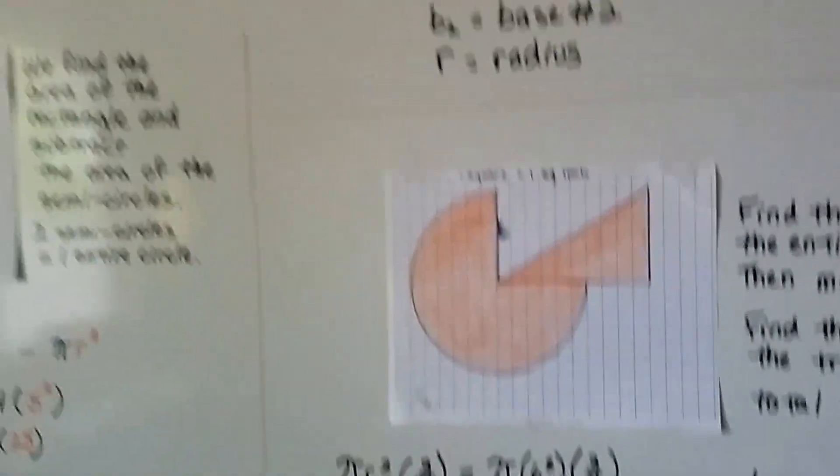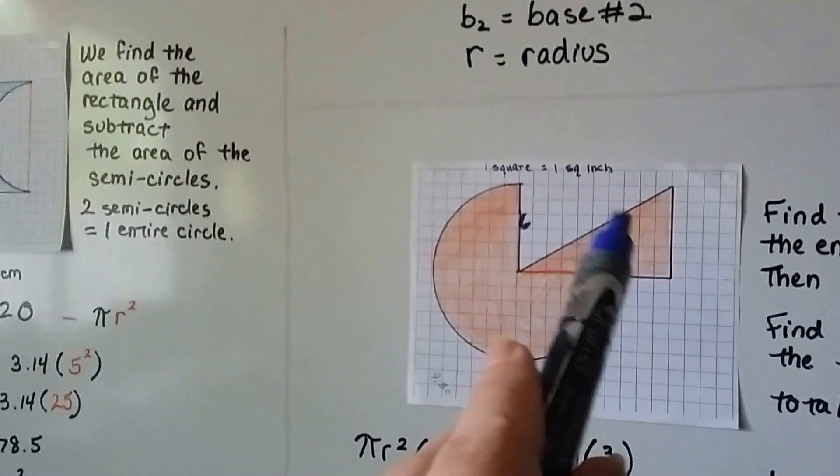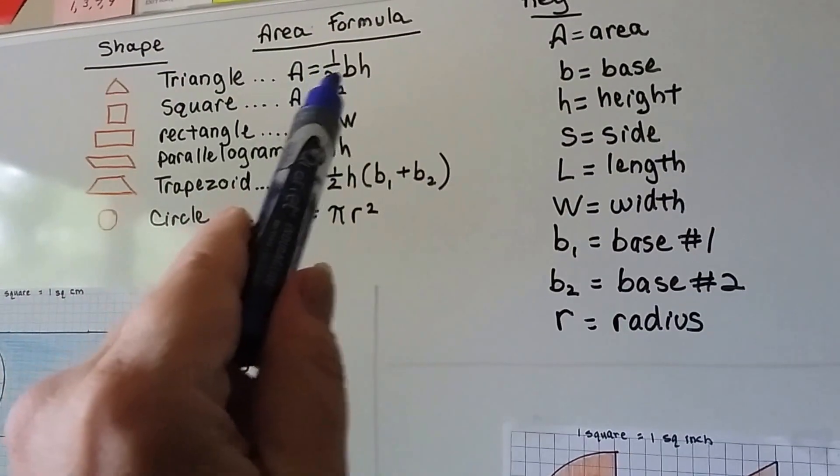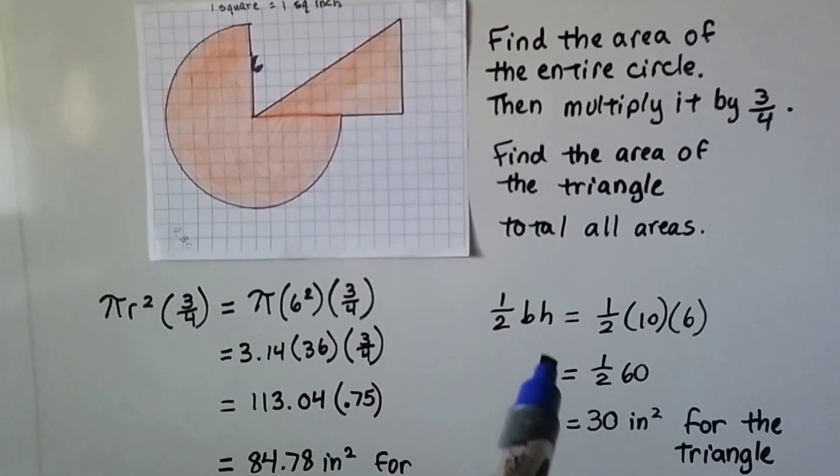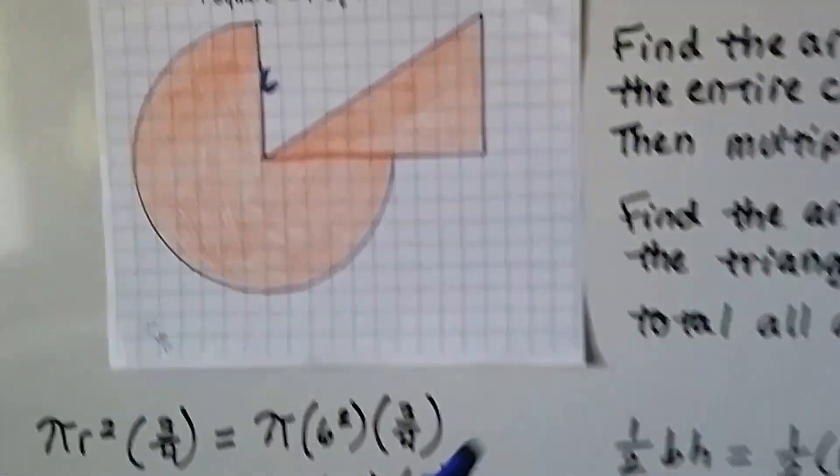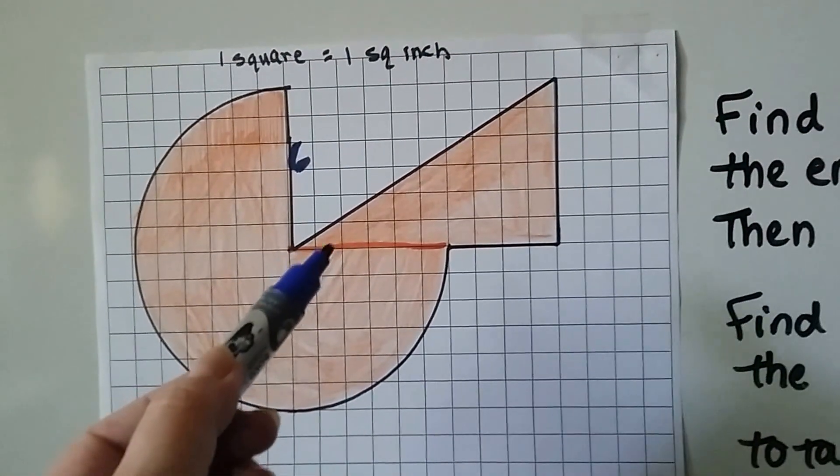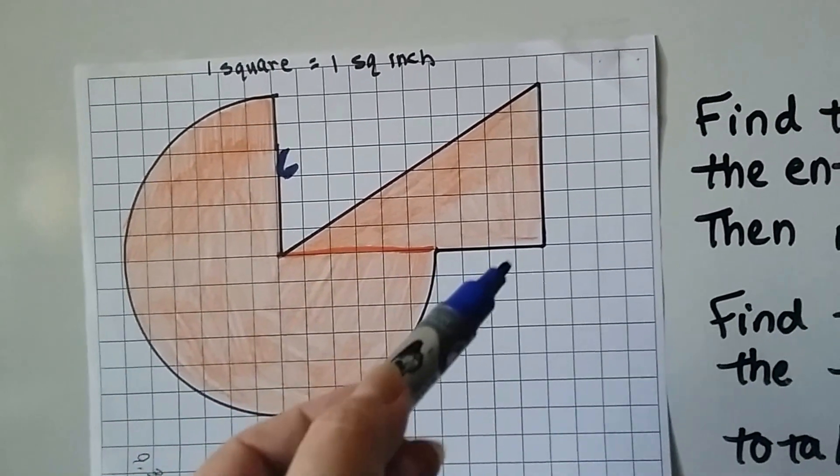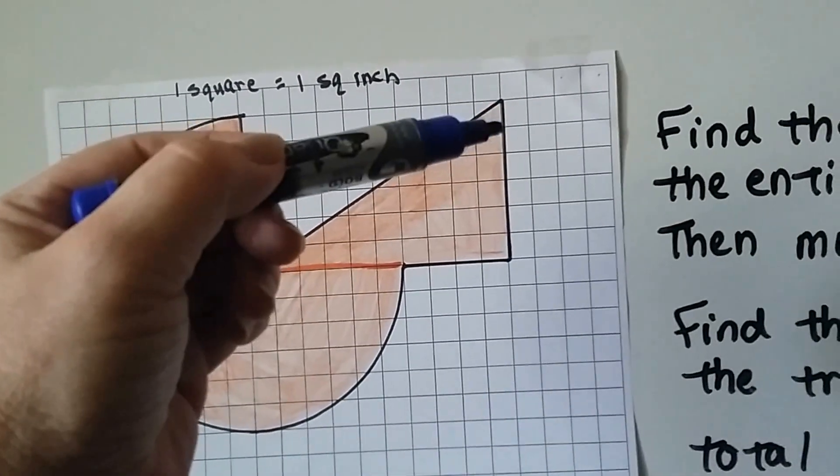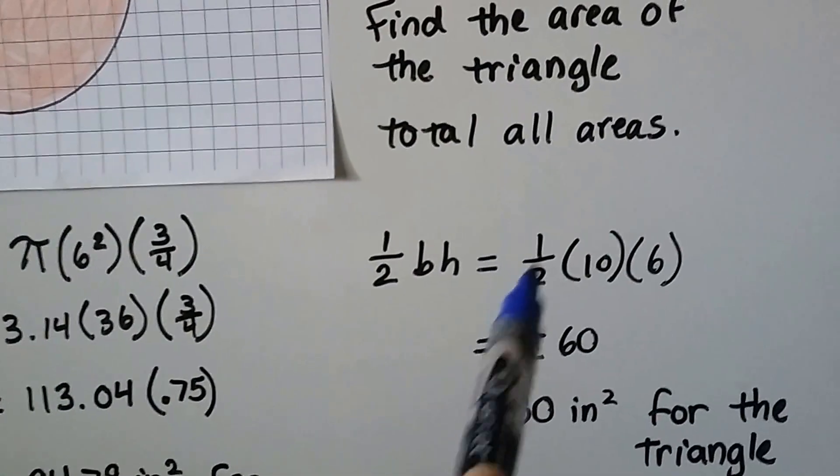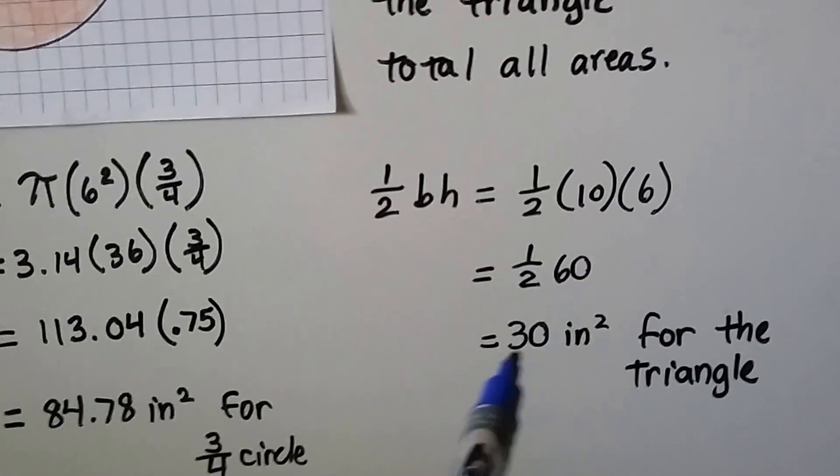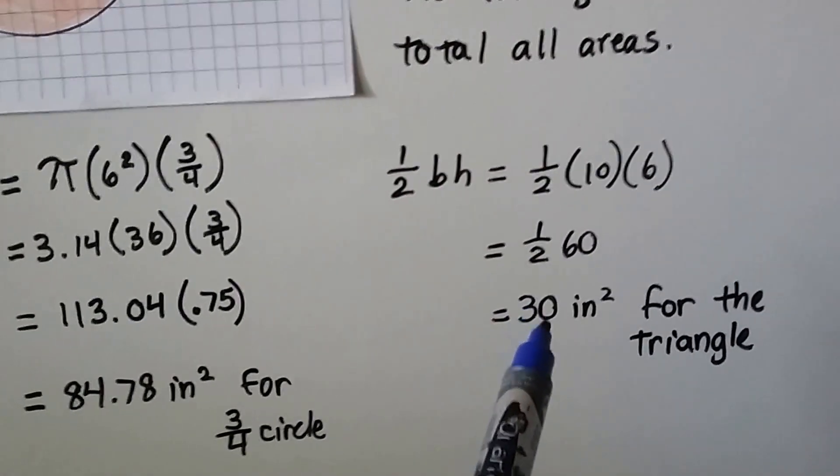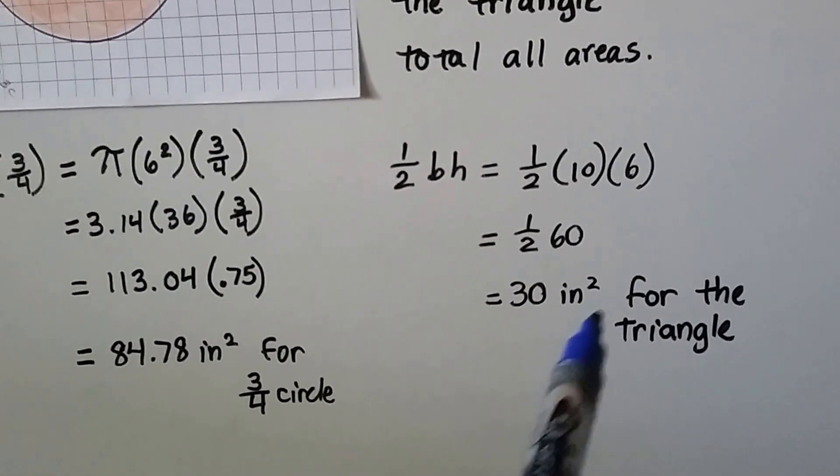Now we have to do the triangle. The area of the triangle is 1/2 base times height. We count the base: 1, 2, 3, 4, 5, 6, 7, 8, 9, 10. The height is 6. So we're going to do 1/2 times 10 times 6. Well, 10 times 6 is 60, and half of 60 is 30, so it's 30 inches squared for the triangle.